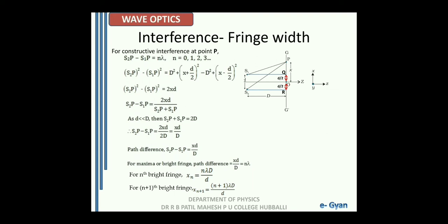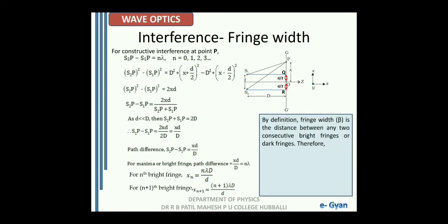Similarly, for the (n+1)th bright fringe, xn+1 equals (n+1) times lambda times capital D divided by small d. We now have two equations: xn gives the position of the nth bright fringe from O, and xn+1 gives the position of the (n+1)th bright fringe from O. These are two consecutive bright fringes, and the difference between them gives the fringe width. Fringe width beta equals xn+1 minus xn, which gives beta equals lambda times capital D divided by small d.